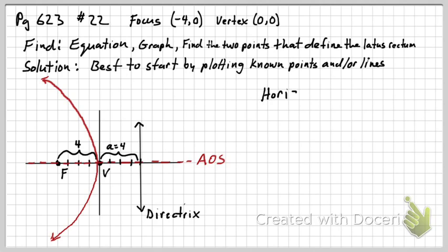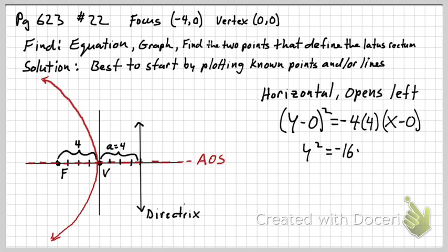So our parabola is going to lie in there somewhere like that. So it's horizontal, opens left, so then that means that our y squared term will be on the left side. We plug in the coordinates for our vertex. a is four - that we looked at from our graph. That is the distance between the focus and the vertex and the vertex and the directrix. So here's our equation for the parabola.